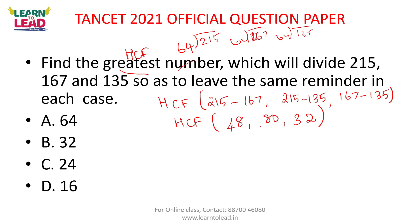To find HCF of three numbers, make a common number and divide. HCF long division method: take the larger number 80 and 48. 48 goes into 80 one time, remainder 32. Then take 48 and 32: 32 goes into 48 one time, remainder 16. Then 32 divided by 16: remainder 0.